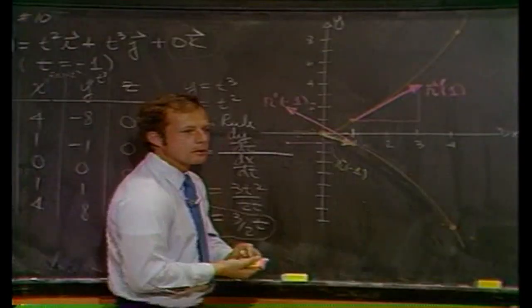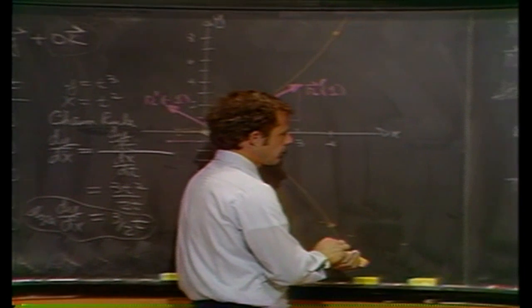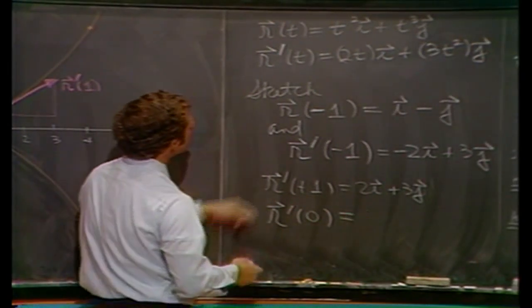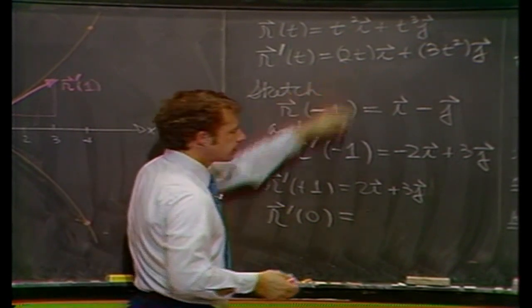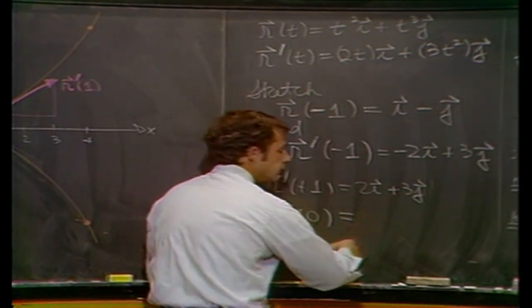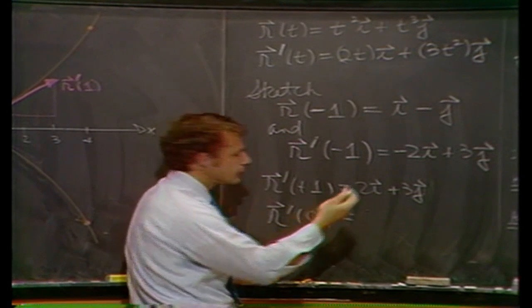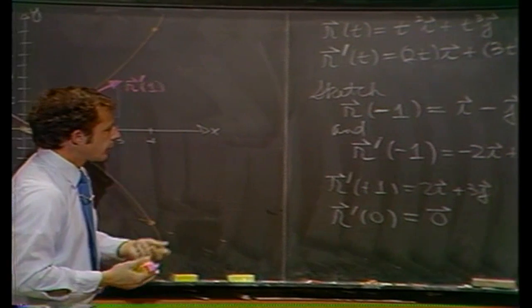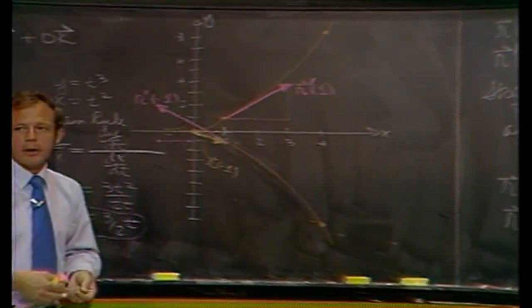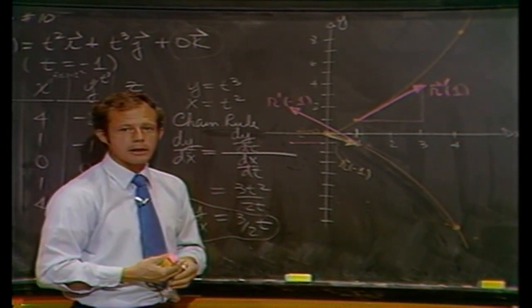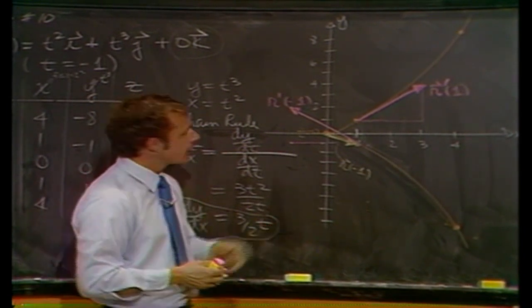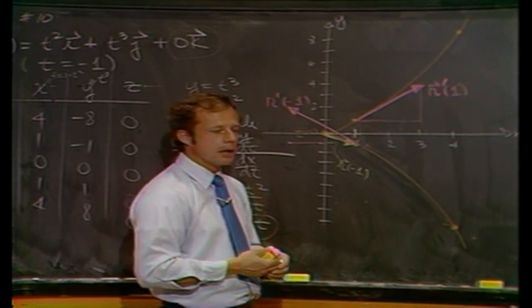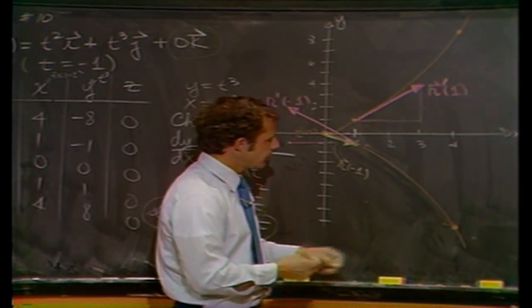What's r prime at zero? Plug in zero for t. What do you get? Zero for both components. So you get the zero vector. So that's what happened, I guess. The fly stopped there instantaneously. Has no velocity. Has no direction, basically. That's kind of a bad point, as you might expect anyway. It's a sharp corner. I would stay away from that if you wanted to try to draw any conclusions.